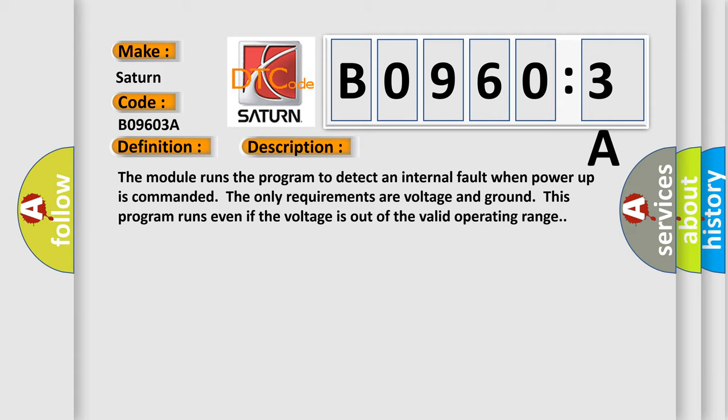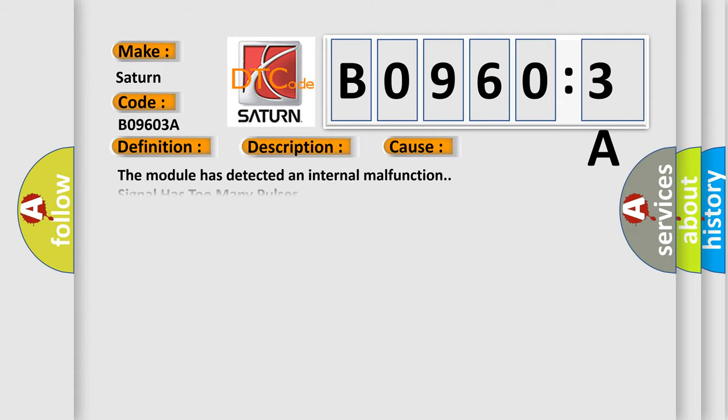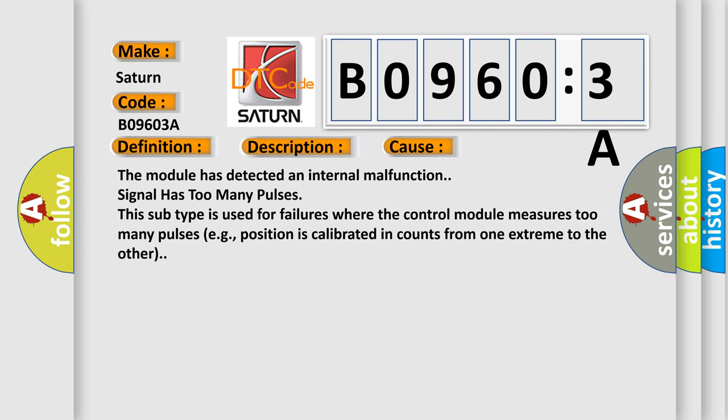This diagnostic error occurs most often in these cases. The module has detected an internal malfunction signal has too many pulses. This subtype is used for failures where the control module measures too many pulses, e.g. position is calibrated in counts from one extreme to the other.